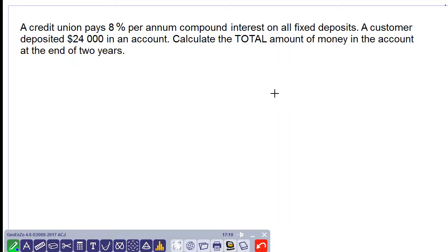Good day everyone. We are working out a compound interest question. A credit union pays 8% per annum compound interest on all fixed deposits. A customer deposited $24,000 in an account. Calculate the total amount of money in the account at the end of two years.